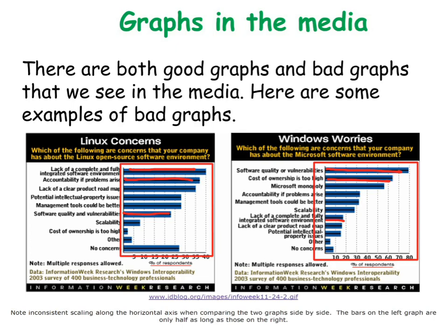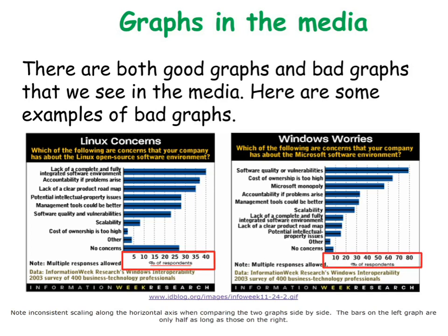However, this is when we've got to read the fine print. If I go down to the bottom, I want you to look at this scale versus this scale. The one on the left — the Linux one — goes from 0 up to 40, whereas the one for Windows goes from 0 up to 80. So this scale on the right-hand side is much more compressed, going from 0 to 80, whereas this one only goes 0 to 40, half the size.